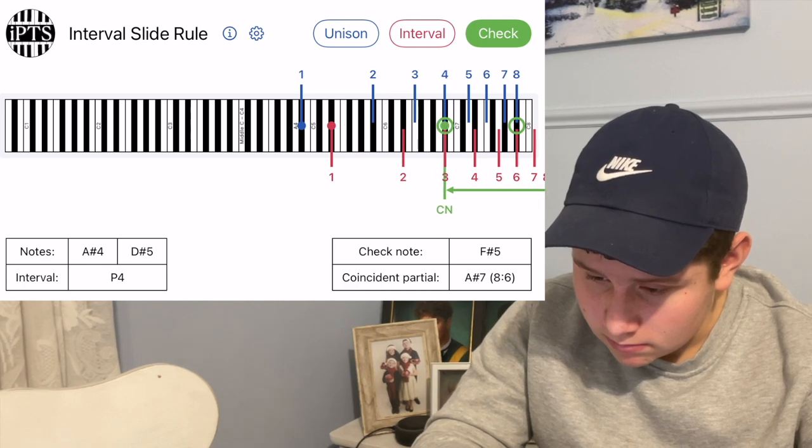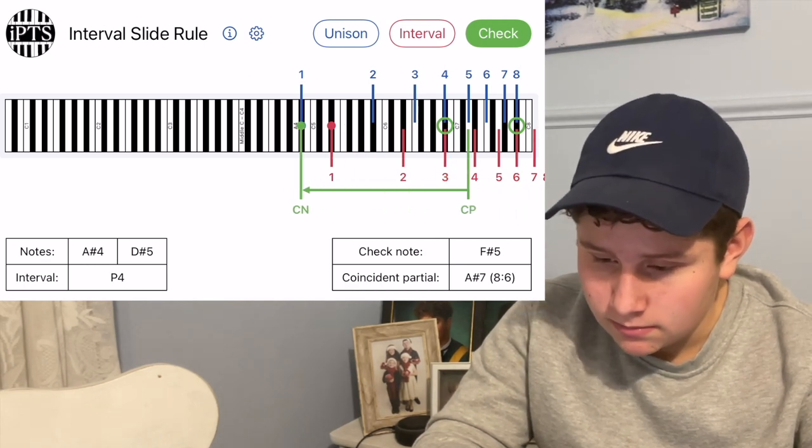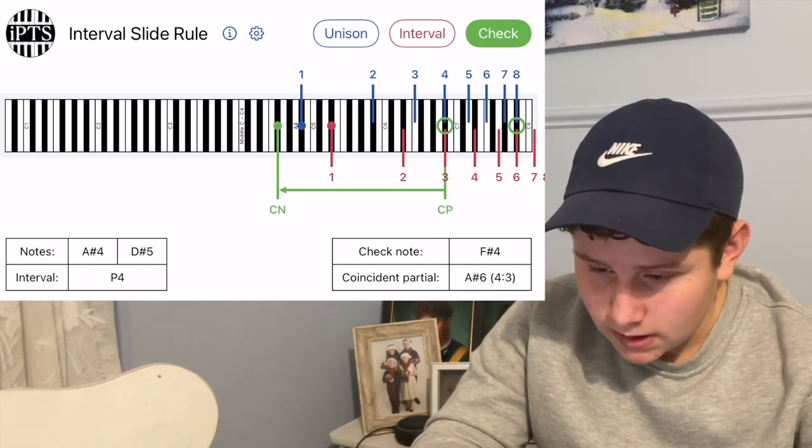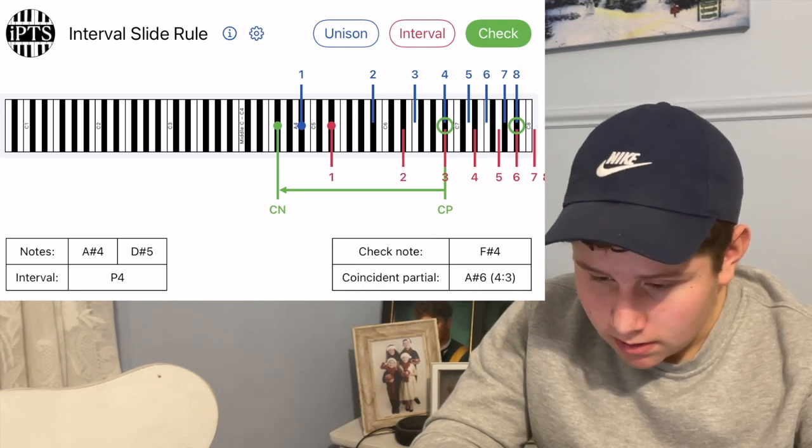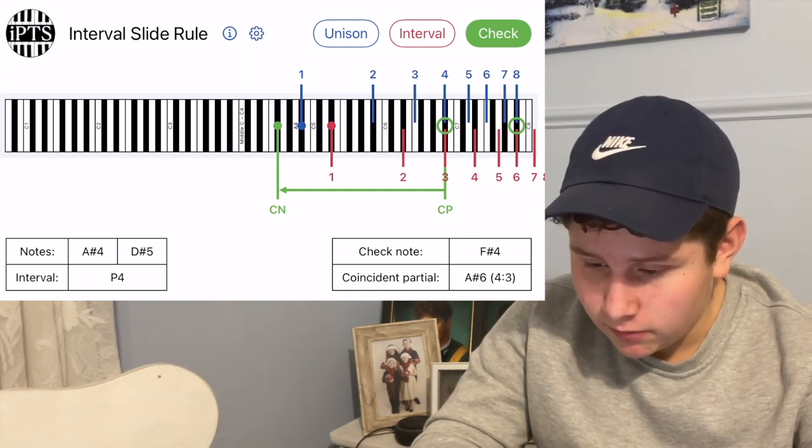So slide the check note around so that the right line is like that. Oh yeah, okay. I was turning the left line. The right line is on that green circle. Now where's the left line? Is that the check note, the C in? Yeah. F-sharp 4.